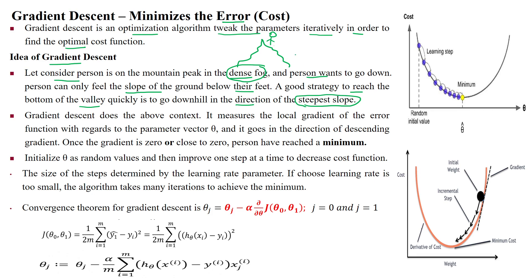He wants to find out the steepest slope to reach the bottom of the valley. Instead of going in different directions — he could go this direction, or that direction, or another direction — the best direction is the one that reaches the bottom of the valley most quickly. For that, we can apply the gradient descent approach.